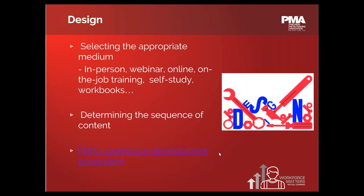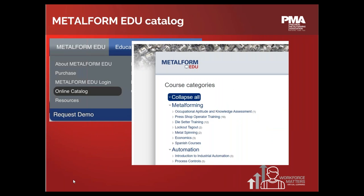We've designed our catalog to help you understand the scope of our offering. We analyzed the general needs of our members and grouped courses into relevant categories. If you're looking for help identifying major competencies and skill areas to start developing your training program, this is a great place to start. I'm going to show you where to find this catalog and go into some course topics to help you think about how Metal Form EDU can address gaps in your workforce training programs.